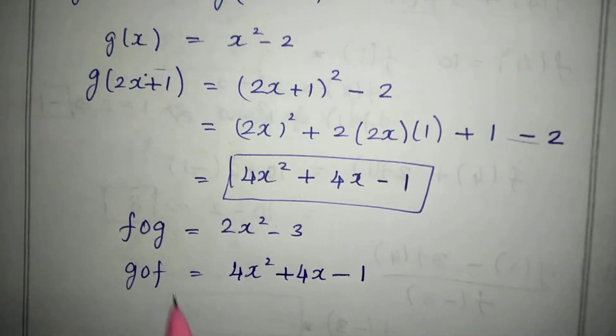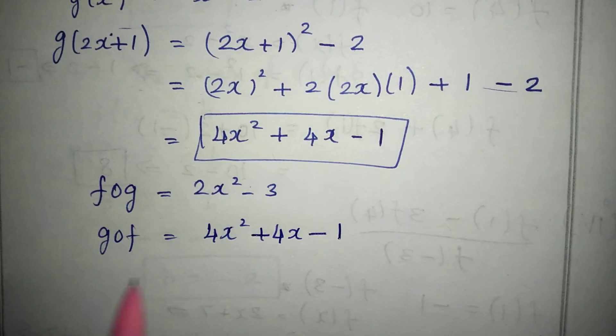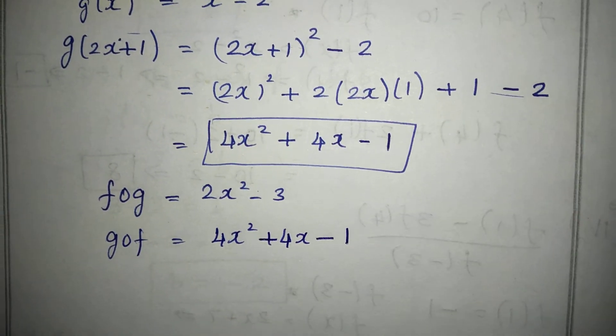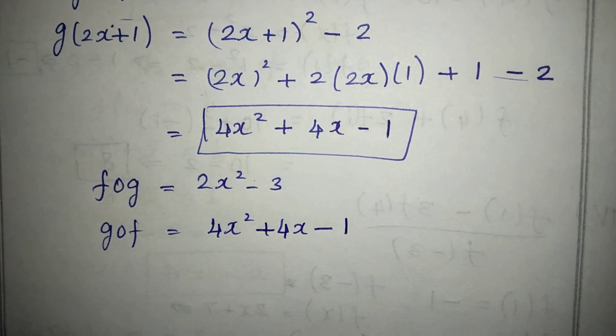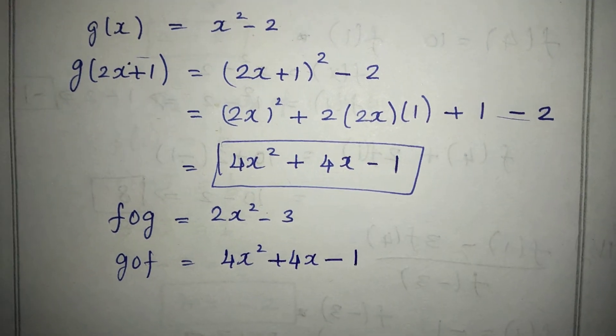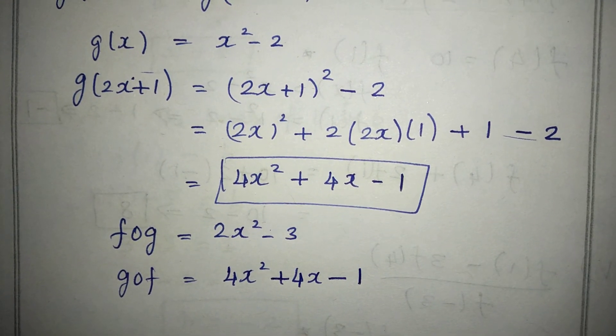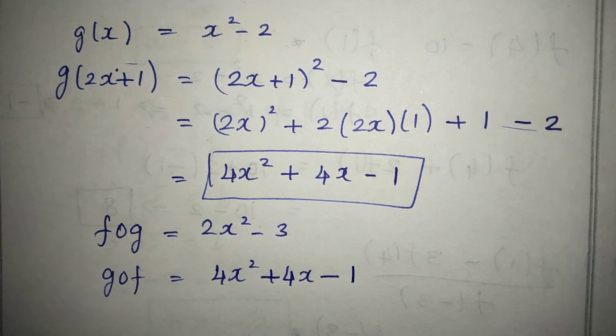So we have found f of g equal to 2x square minus 3, and g of f equal to 4x square plus 4x minus 1. If you like, share and subscribe. Thank you for watching, we'll see you next time.